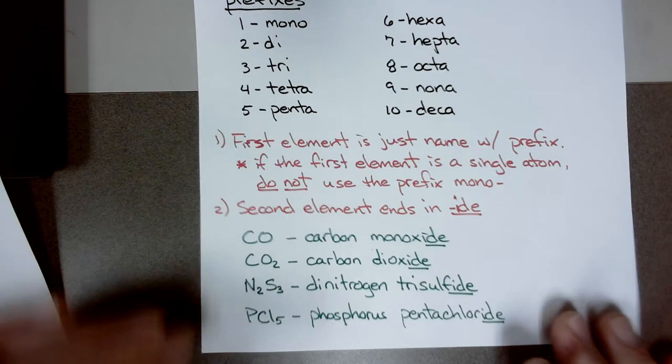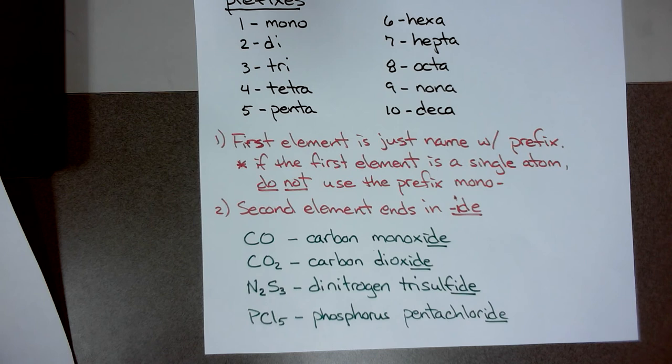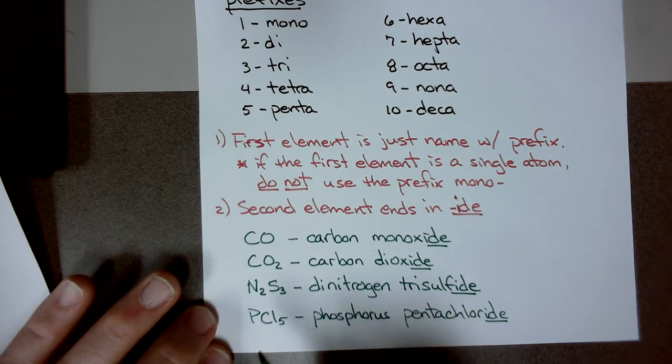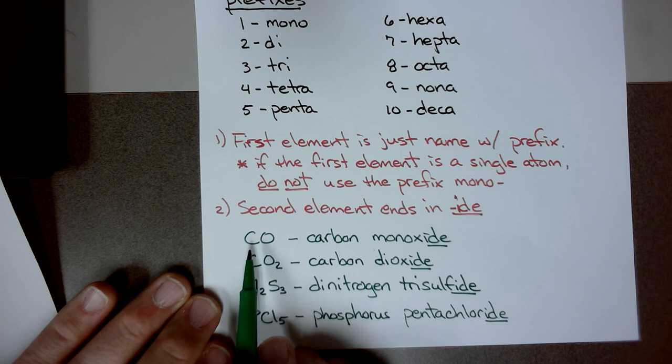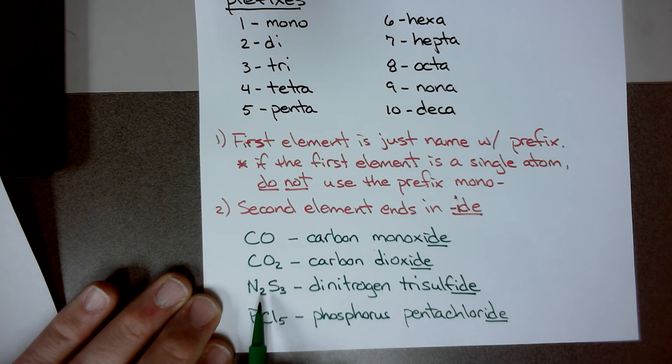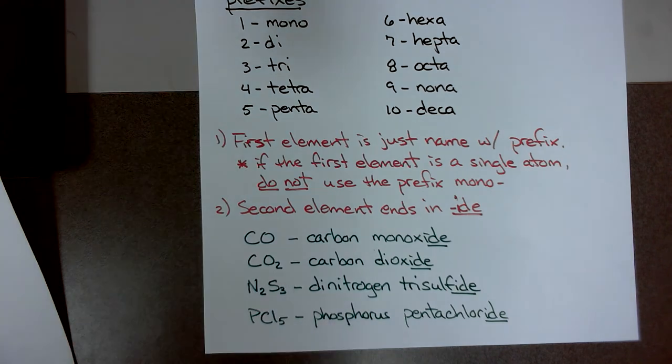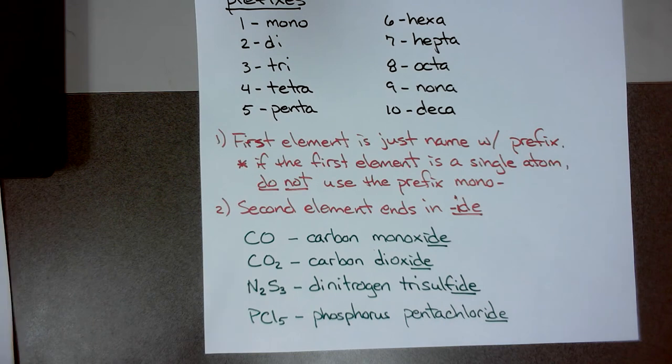That's all there is to naming binary covalent compounds. The other group of covalent compounds are organic compounds, and we'll go over the basics of that later. But right now, we're just looking at binary covalent. In other words, two types of atoms that are nonmetal to nonmetal bonded to each other. And we use prefixes to identify the number of atoms, like di for two, tri for three. That is the video on binary covalent compounds. Thank you.